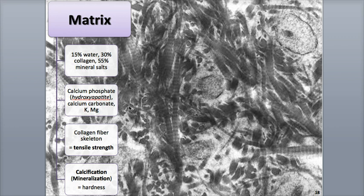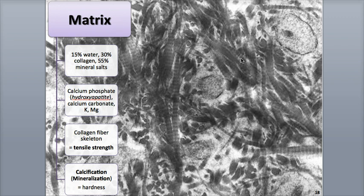Calcium phosphate often combines with calcium hydroxide, another salt, to form a crystalline substance called hydroxyapatite. As these salts form, they combine with other mineral salts, including calcium carbonate, as well as potassium and magnesium ions. The collagen fibers, seen here in this micrograph as these long strand-like filaments, form an internal architecture of the extracellular matrix, similar to the framework of a house.